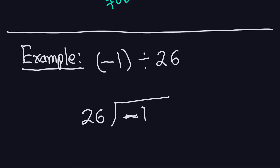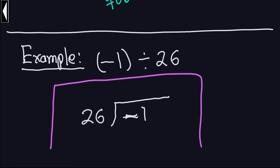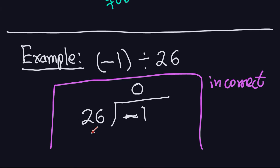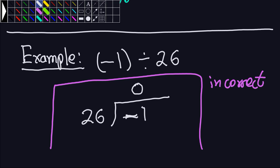Many of you probably thought the answer is zero — but it turns out that is not correct. I'm going to mark this approach as incorrect. Let's say you say 26 goes into negative one zero times, so the quotient is zero. You then multiply zero by 26, which of course gives zero.